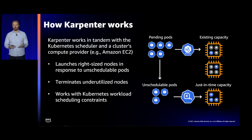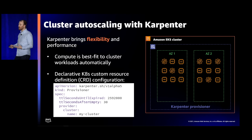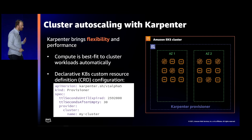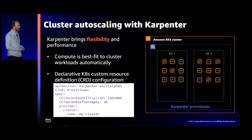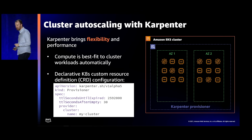Karpenter brings a great deal of flexibility to how you can get compute for your clusters. It will run multiple different kinds of compute together — if your workload needs a GPU, Karpenter will launch a GPU-accelerated instance; if you need Graviton, Karpenter will launch a Graviton instance. This is all configurable using Kubernetes CRDs. The provisioner CRD is Karpenter's main CRD, which allows you to define policy — for example, TTL seconds after empty and until expired — as well as configuration details that help Karpenter know how to speak to your cluster's API server and compute provider.